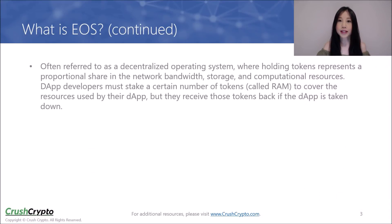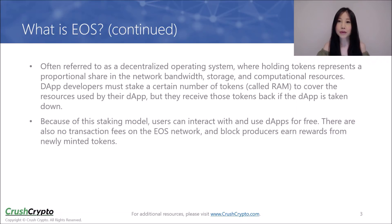EOS is often referred to as a decentralized operating system. Holding EOS tokens represents a proportional share in the network bandwidth, storage, and computational resources. DApp developers must stake a certain number of tokens in order to cover the resources used by their applications, and they receive those tokens back if their application gets taken down. With this staking model, users can interact and use dApps for free. The EOS network also has no transaction fees, and block producers earn rewards from newly minted tokens.